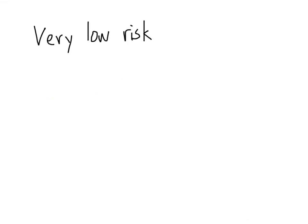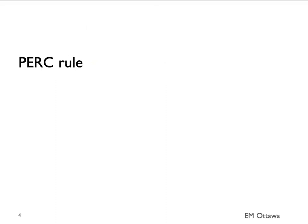First, the very low risk patient. Very low risk patients are the kind of patient that after you examine them, you're really not concerned about PE. Once you see a patient like this, you're going to apply the PERC rule. If the patient is PERC rule negative, the patient does not need further workup for a PE. The PERC rule was developed by Dr. Jeff Klein and has 8 criteria.